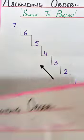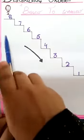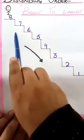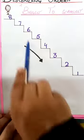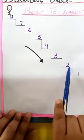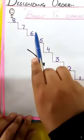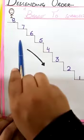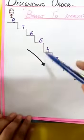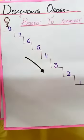And descending order means from biggest to smallest. When the boy comes down, he uses the steps from 8, 7, 6, 5, 4, 3, 2, 1 — he is using the backward order. So that order is also called descending order. When we are coming from biggest to smallest — bade se chote ki taraf jana — that order is called descending order.